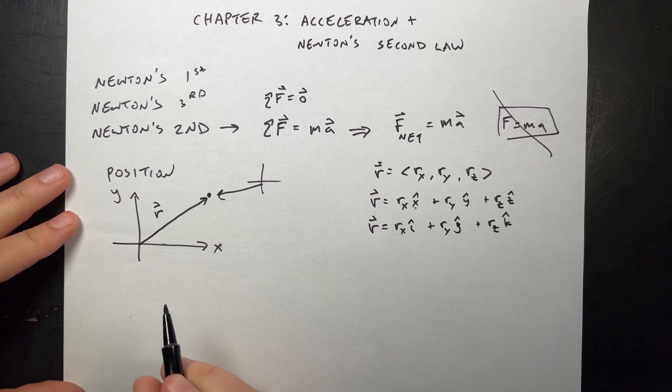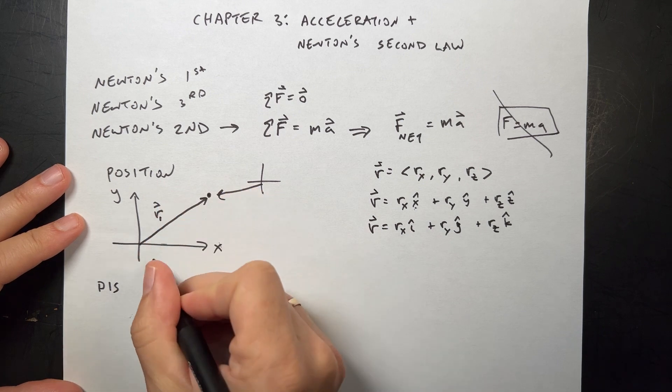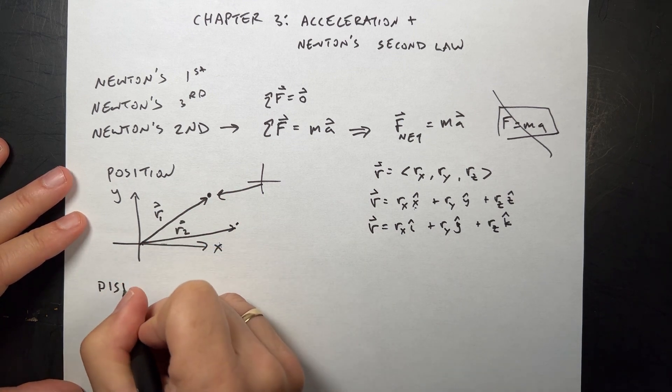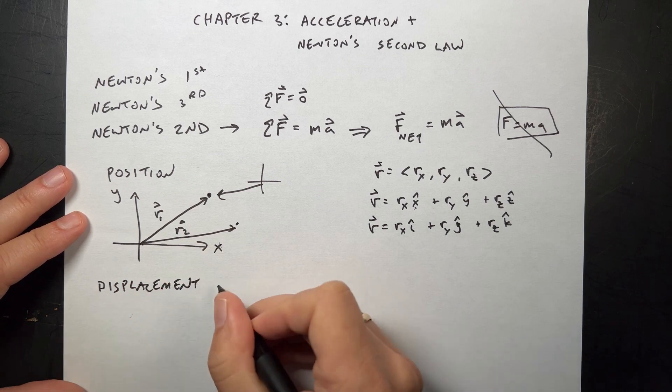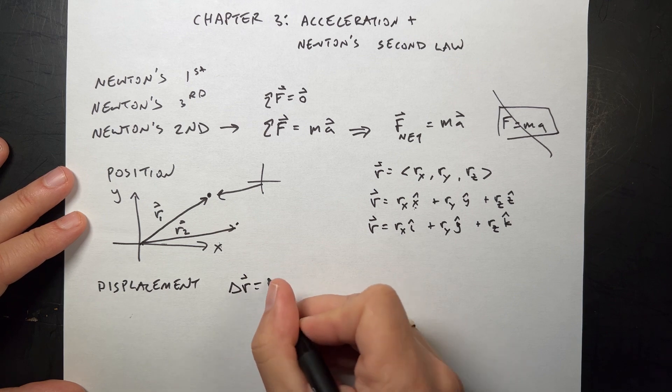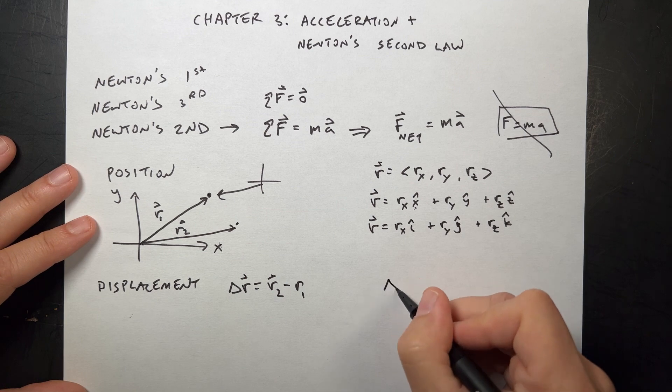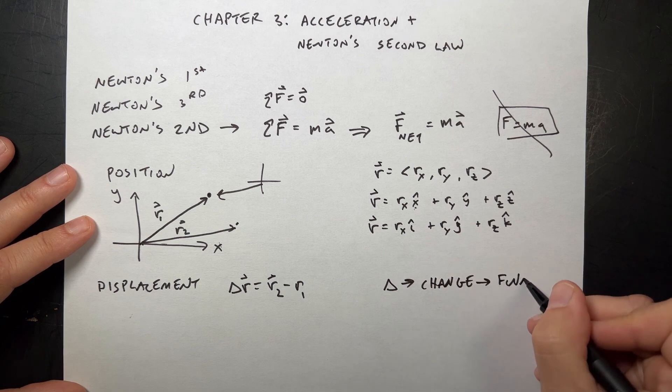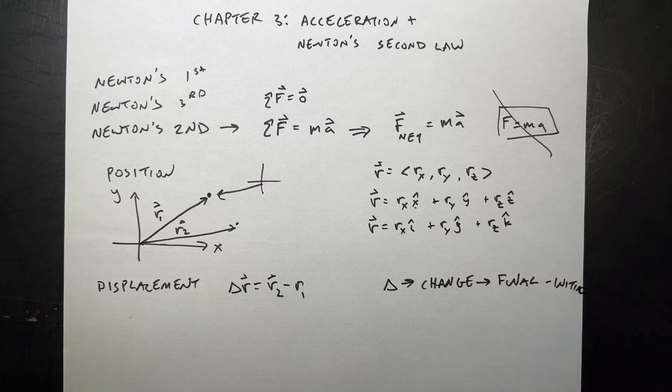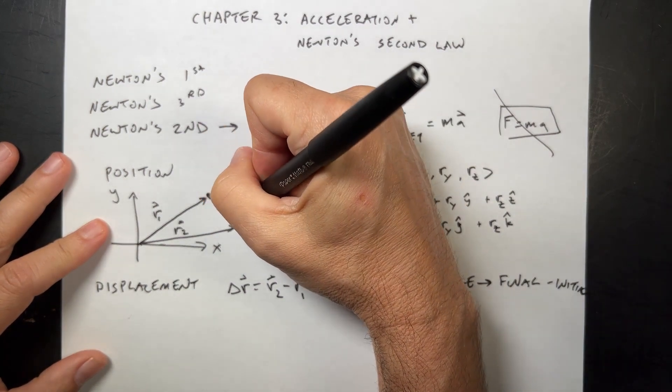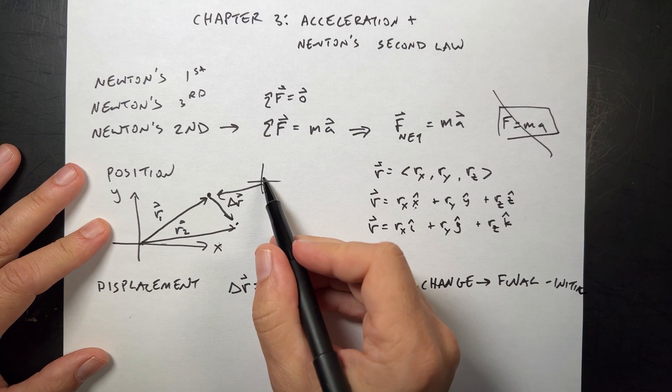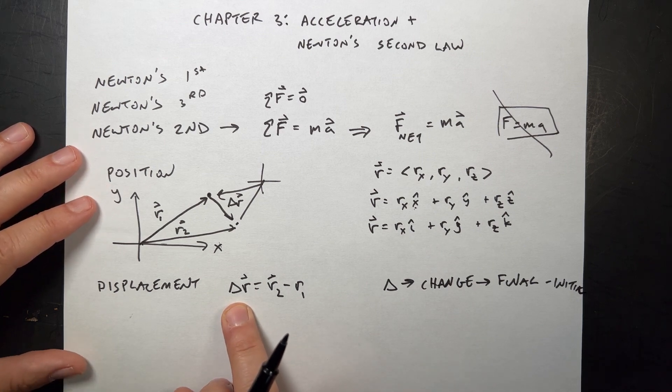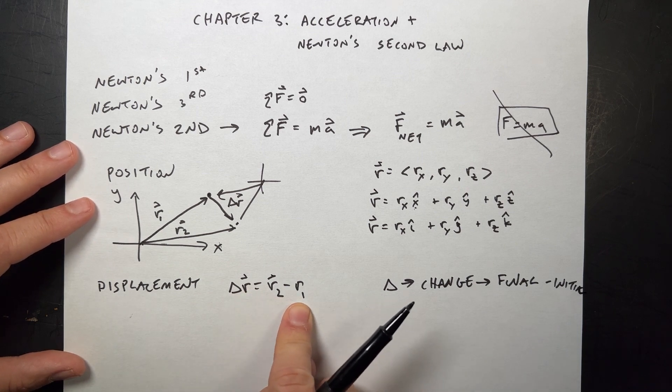But what we really care about is displacement. Imagine that I go from here, R1, to here, R2. I have two vectors. We call this displacement and we define this as delta R equals R2 minus R1. In physics, the delta always means change, or final minus initial. The final position is R2, the initial is R1, and that's my delta R. If I move my coordinate system, I have two different positions, but delta R is the same. So delta R does not depend on your coordinate system, which is kind of nice.